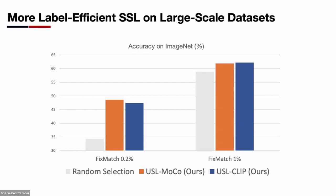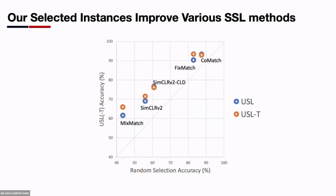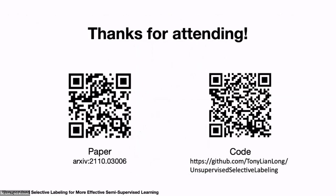USL also leads to more label-efficient SSL on large-scale datasets and is able to leverage multi-modal CLIP models for even better performance. Our improvement is more prominent at lower budget — with 0.2% labeled data (around 2 labeled samples per class), we get 14% improvement on ImageNet. Our method consistently works with various SSL methods, and integrating USL into SSL methods is straightforward, involving only switching the label set. We encourage viewers to try USL on their favorite SSL methods. Our paper and code are available through the QR code.